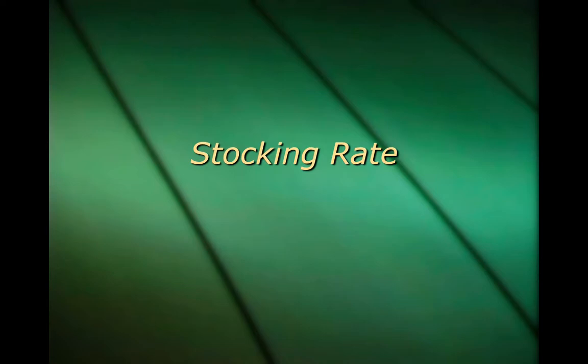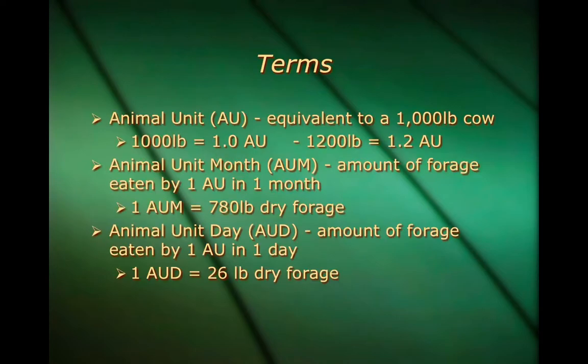In this presentation we're going to look at stocking rate used for the range judging contest. The first thing we need to know are some terms related to stocking rate. Let's start with animal unit, or AU. An animal unit is equivalent to a 1,000 pound animal or cow, so a 1,000 pound animal would be 1.0 AU, or a 1,200 pound animal would be 1.2 AU.